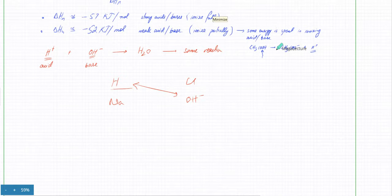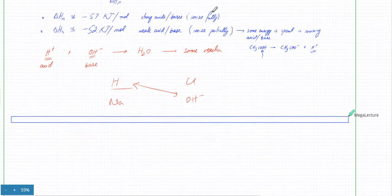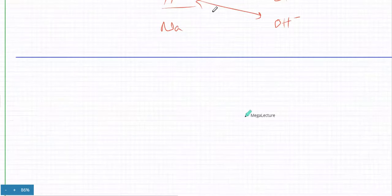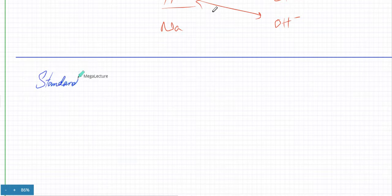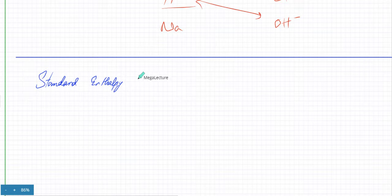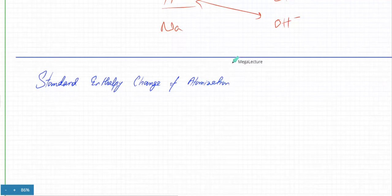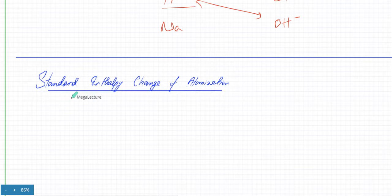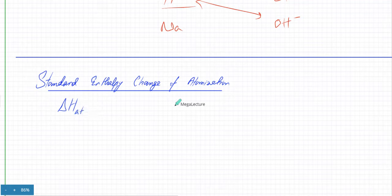Moving to the next part: another important enthalpy change definition is the standard enthalpy change of atomization. The symbol is ΔH with a small subscript 'at' — sometimes written as 'atom', but usually just 'at'. It is always positive; it is always endothermic.